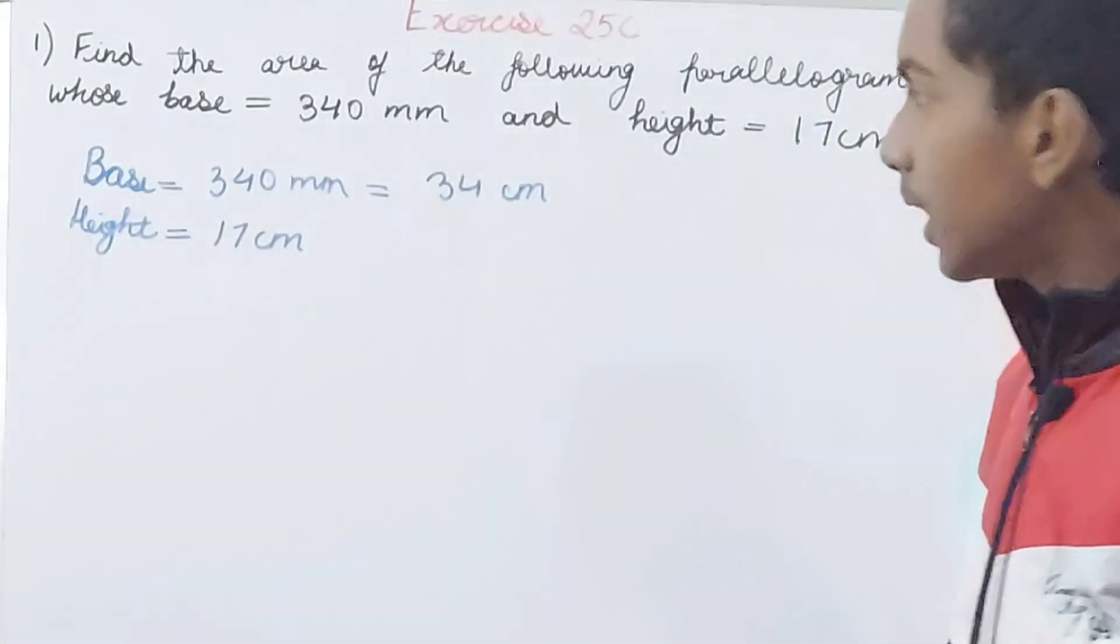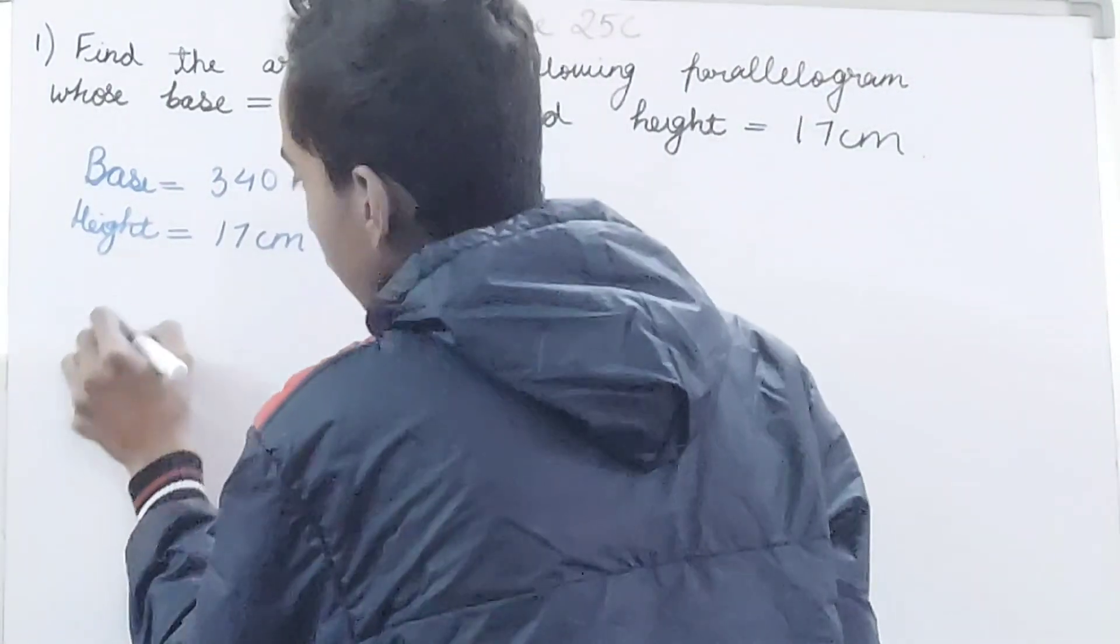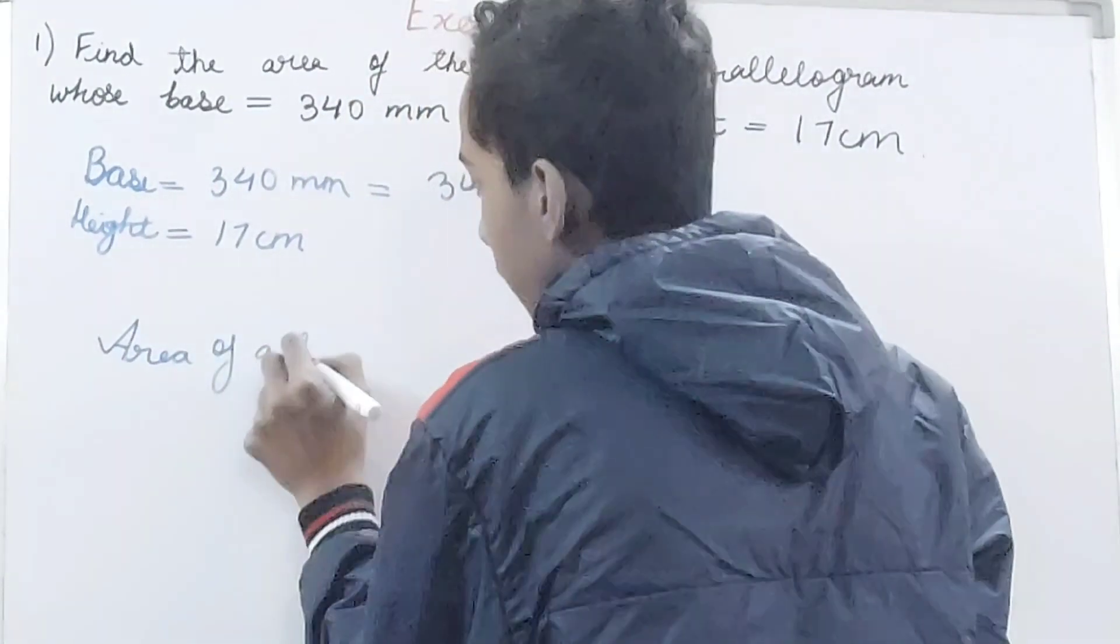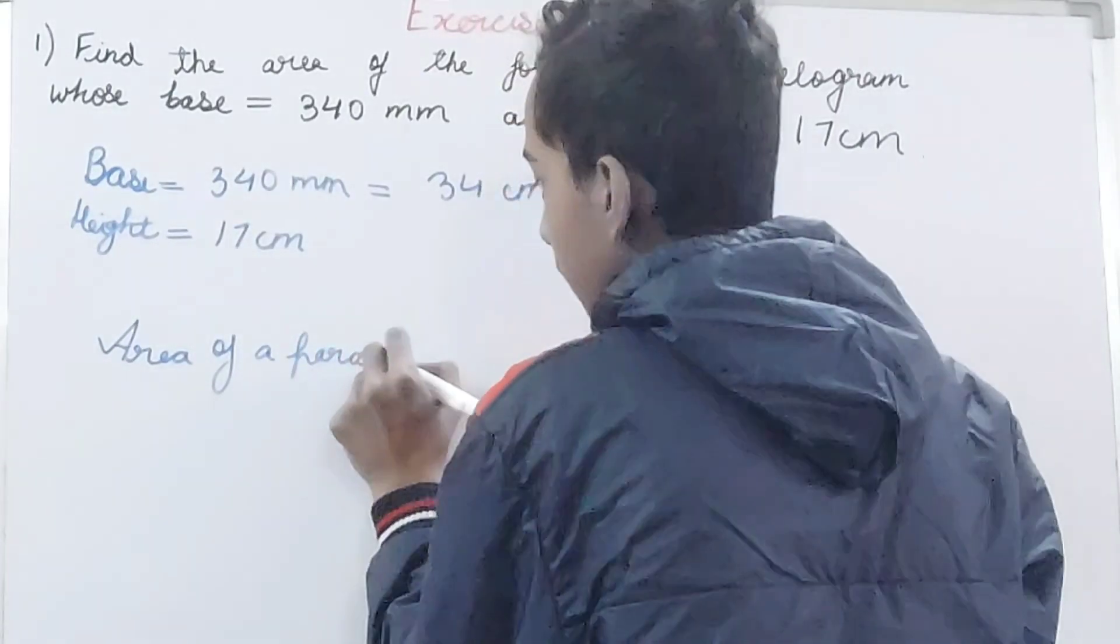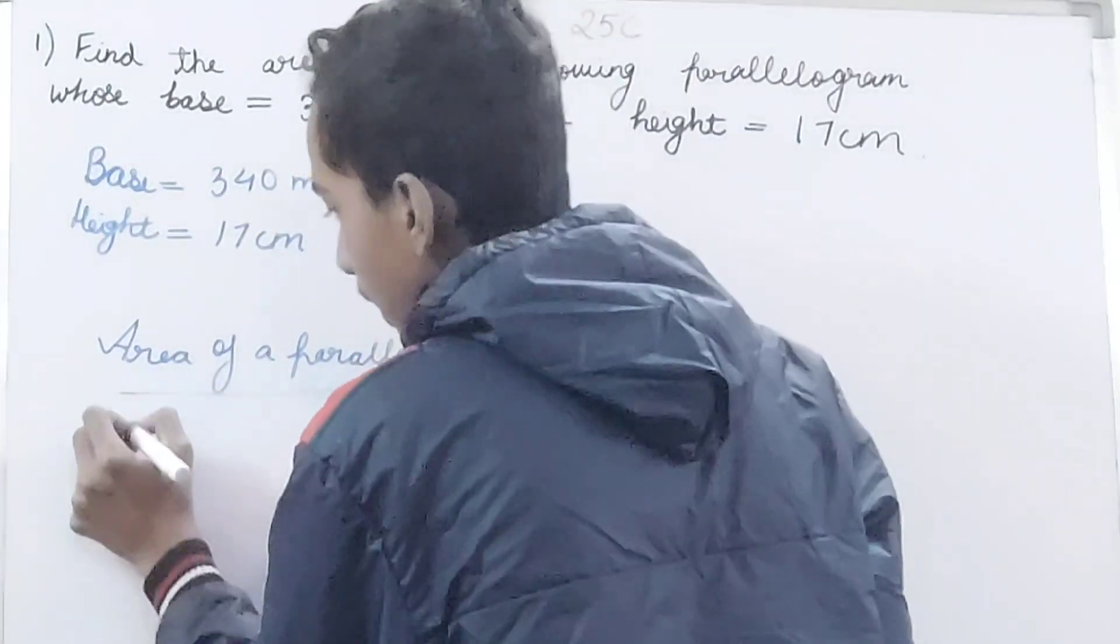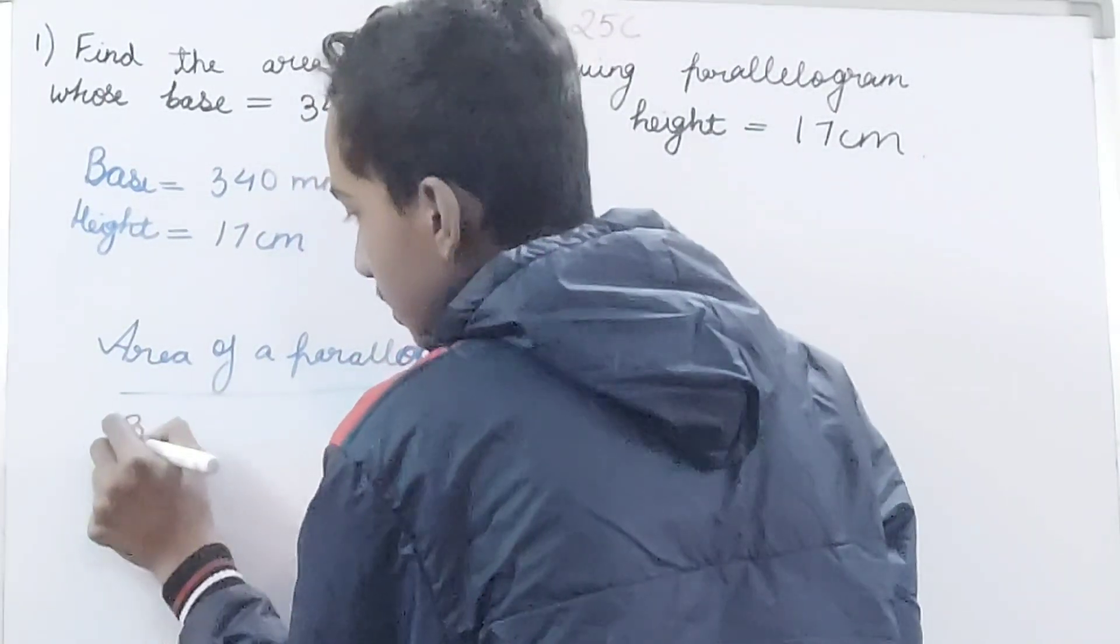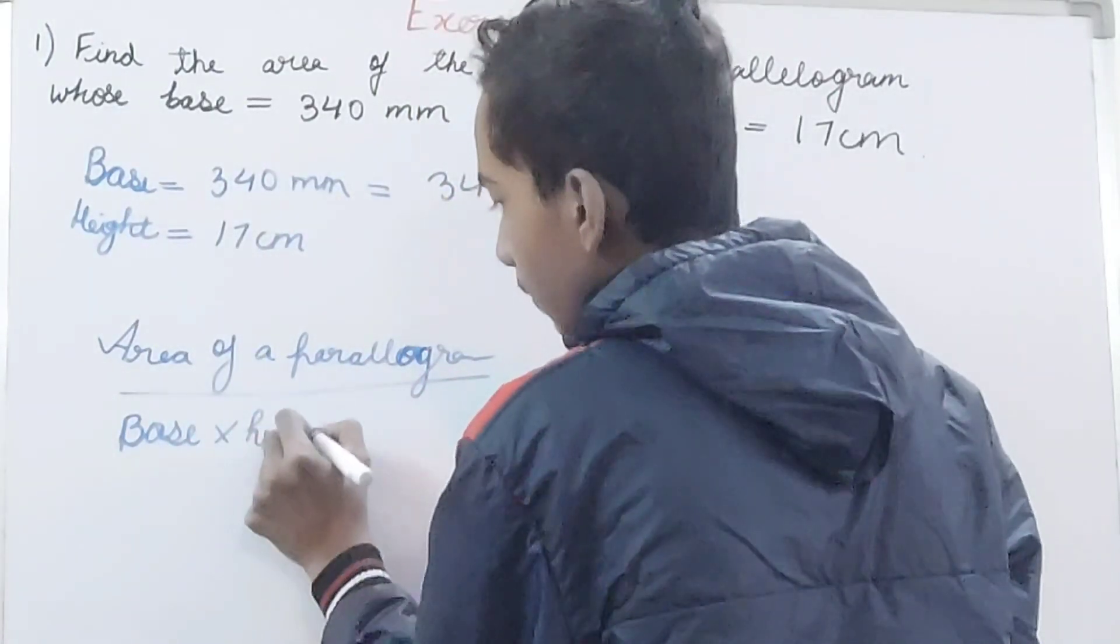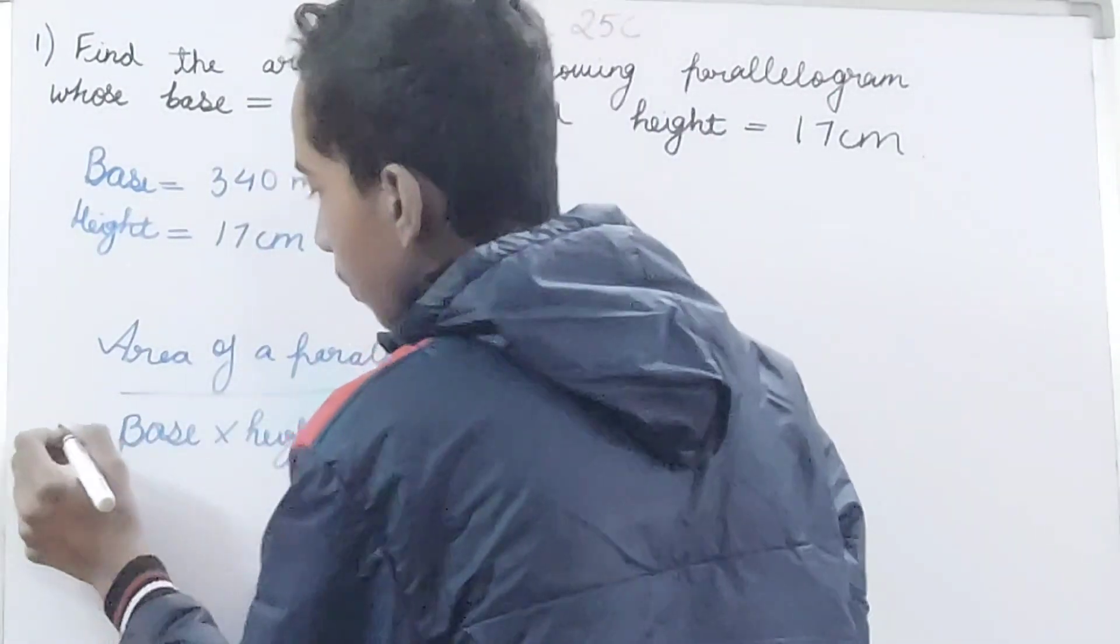Now use the formula for area of a parallelogram. The formula is base times height. It's just simple - there's no half, no this or that, just base times height.